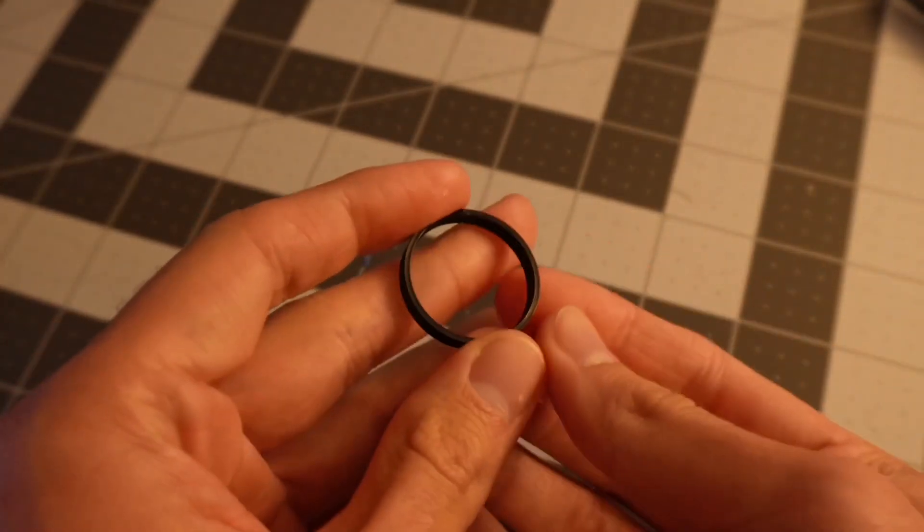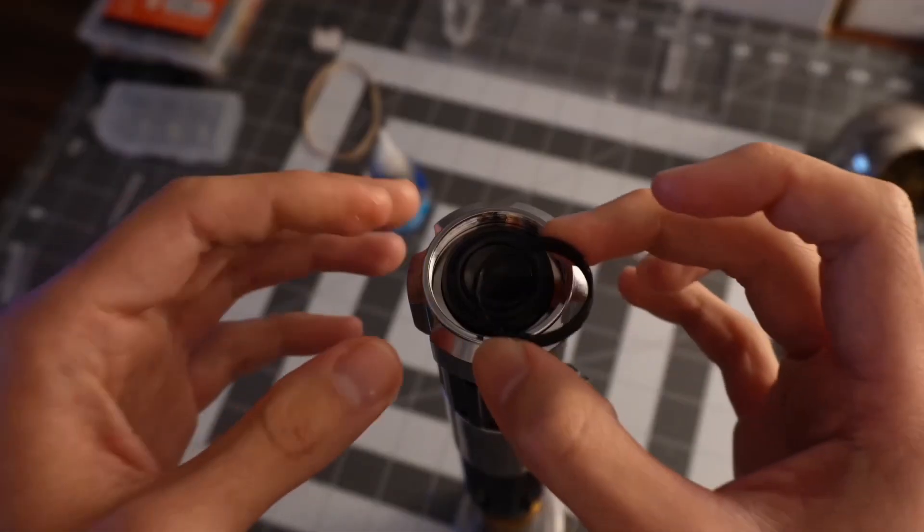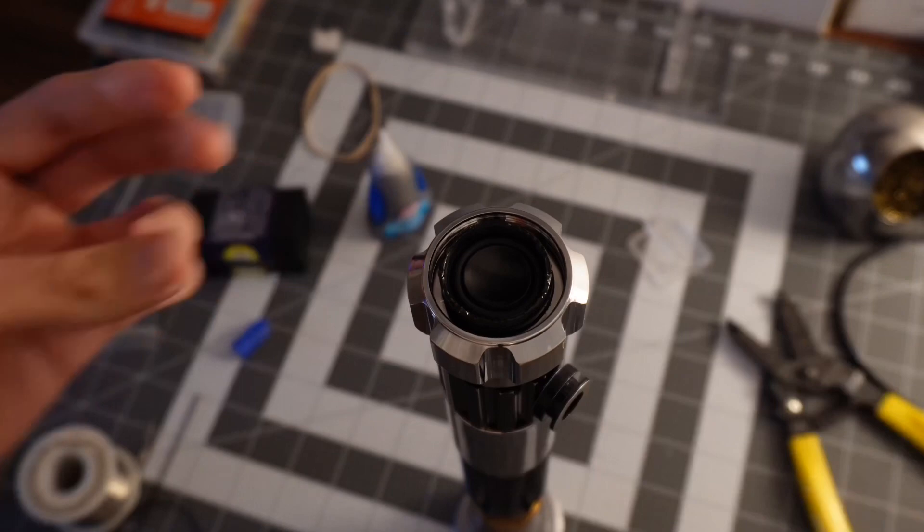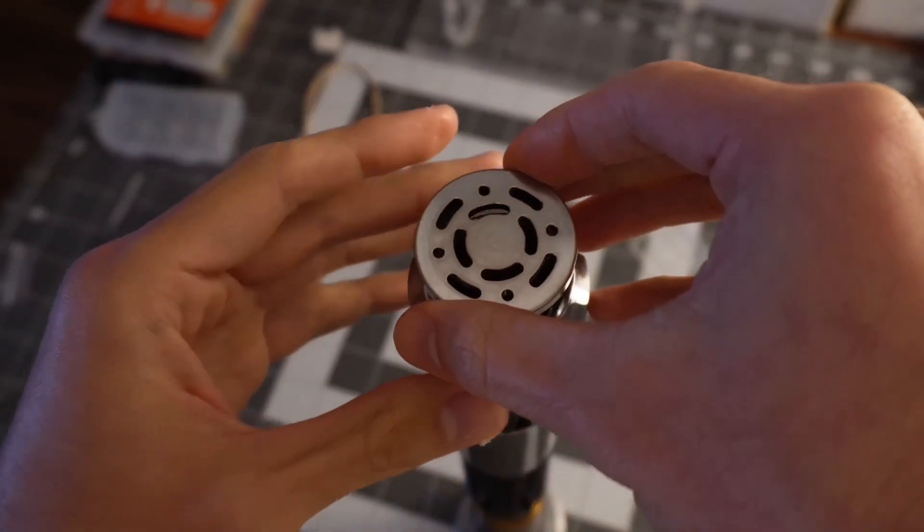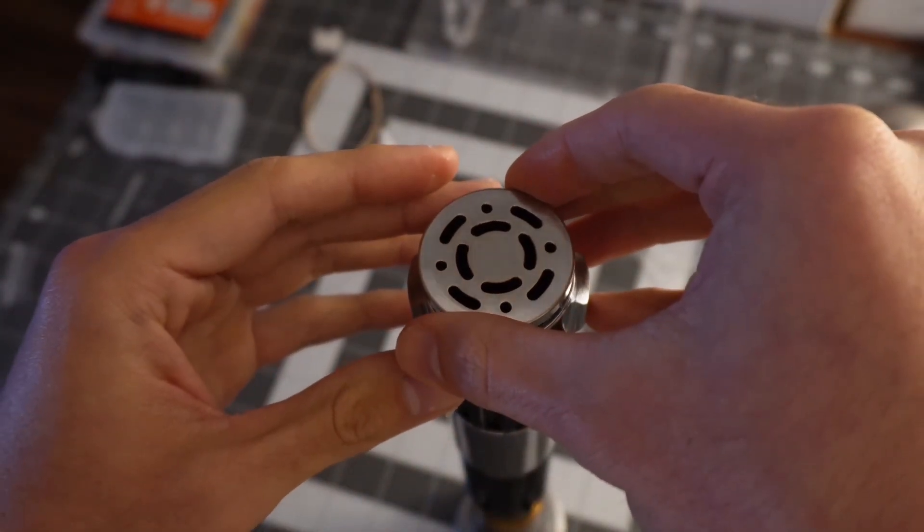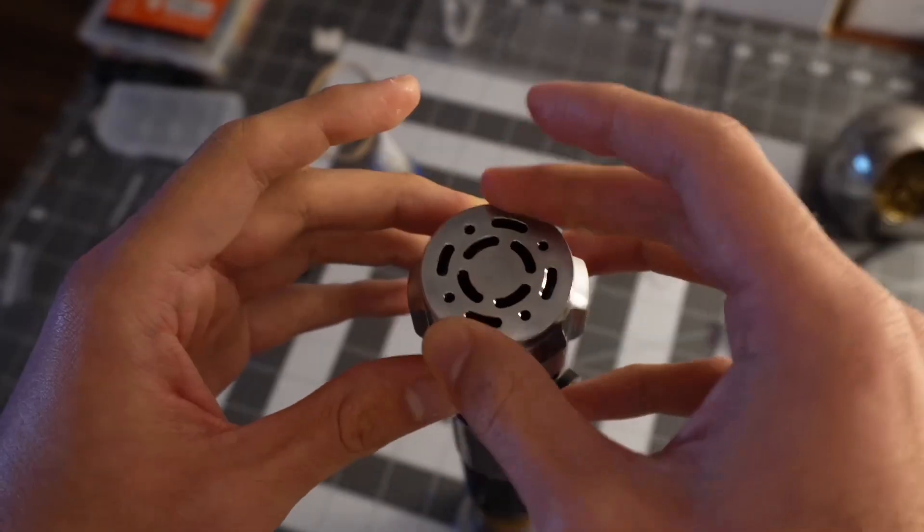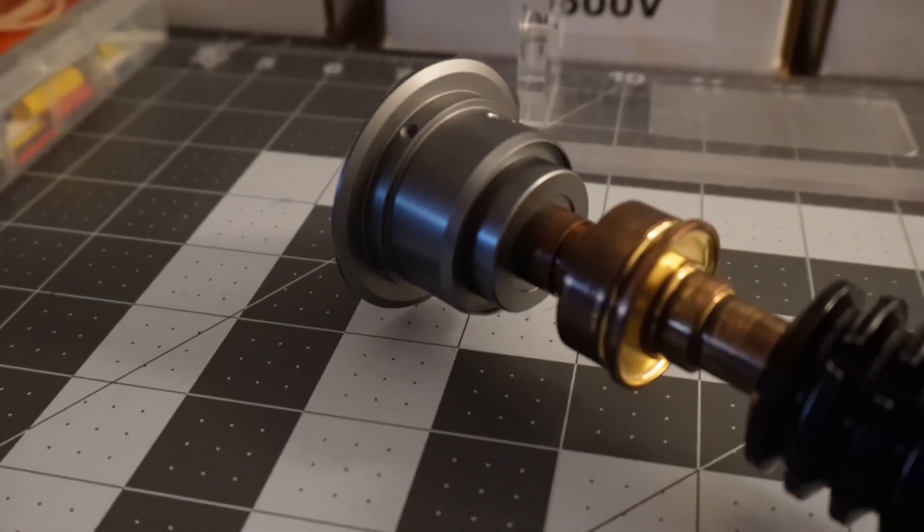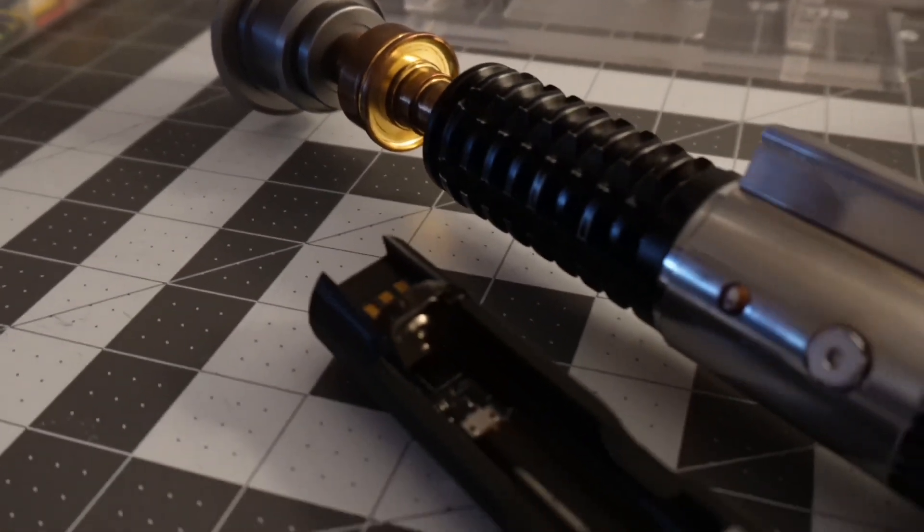Now there is one last thing I need to do to complete this project though, and that's to glue in the booster ring I made to keep the chassis in place and prevent the speaker from hitting the pommel. The easiest way I've found to do that is to put the glue on the ring, put the ring on top of the chassis, and then slowly screw in the pommel. Now I just have to wait a little bit to let the glue cure, and then once that's done, I can move on to testing to make sure everything works.